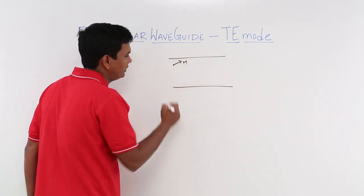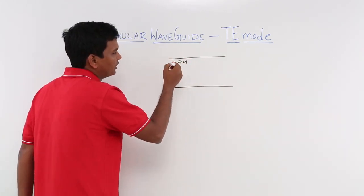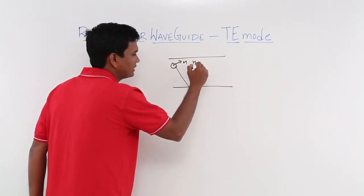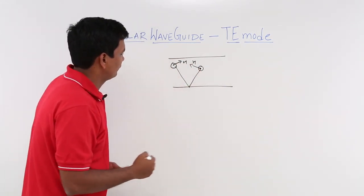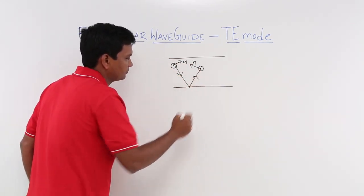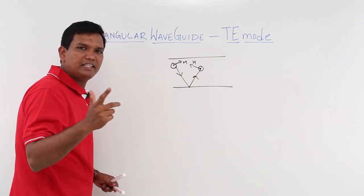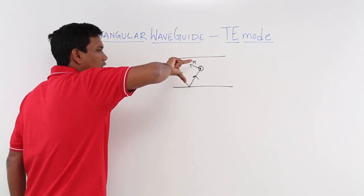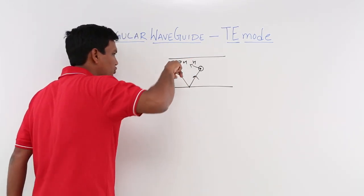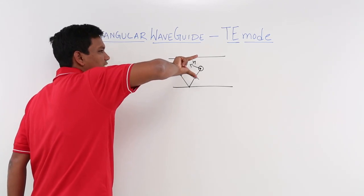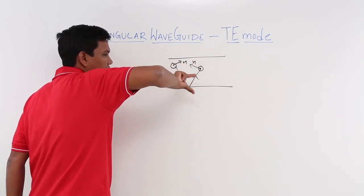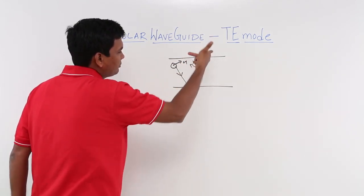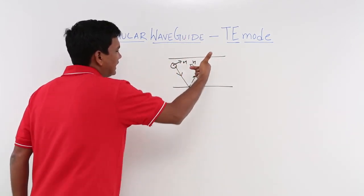Let us say that this is my magnetic field. The electric field is perpendicular out of the board and it is propagating like this. So the same way again, my magnetic field will be like this and electric field will be out of the board. So this is my direction of propagation — this is how the magnetic field and electric field are oriented inside.